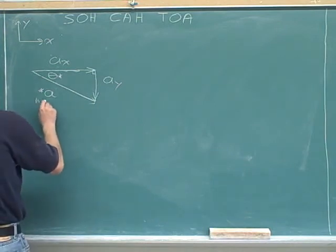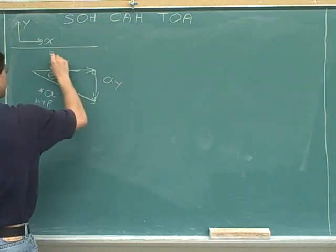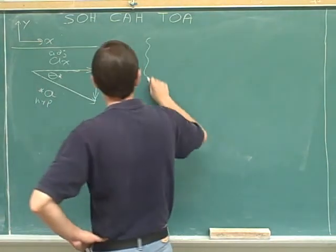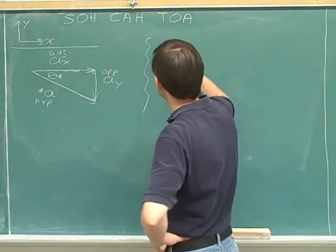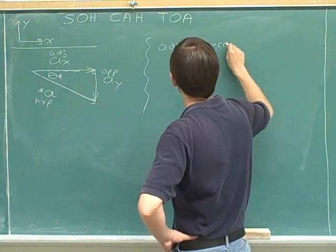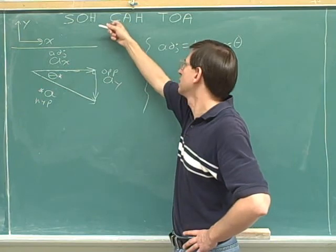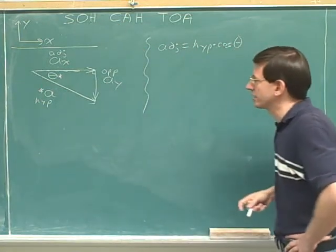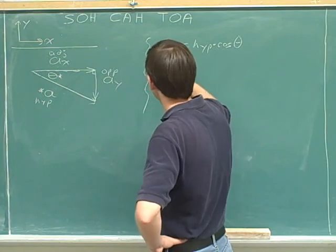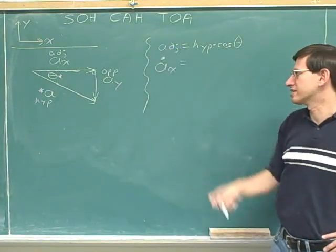We could say that this would be the hypotenuse, this is the adjacent side, and this is the opposite side. To figure out the adjacent side, we have to take the hypotenuse and multiply it by the cosine of our angle theta. Cosine because of CAH — the adjacent side comes from the cosine. Our symbol for the adjacent side here is a sub x with a dot because the adjacent side gives us a length, which is a magnitude.